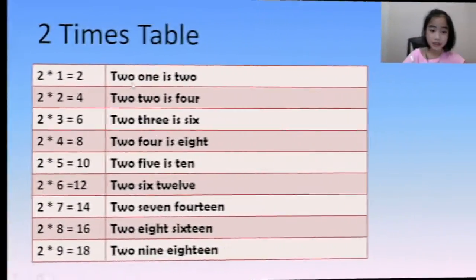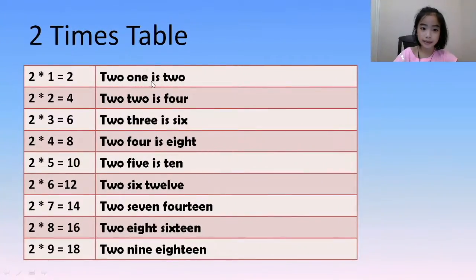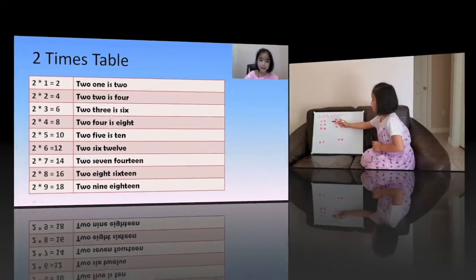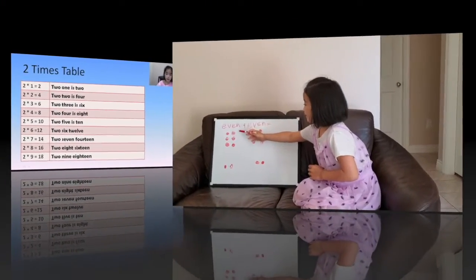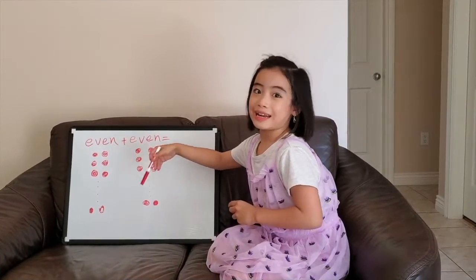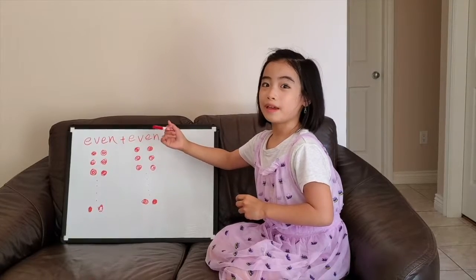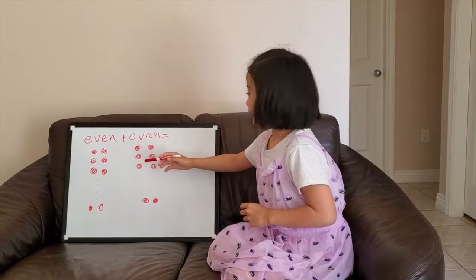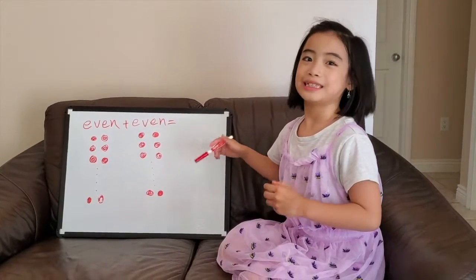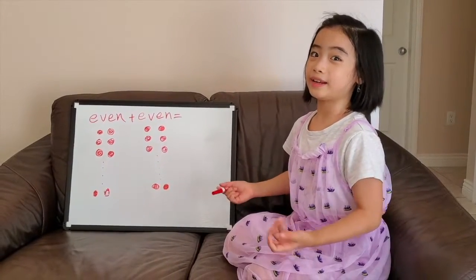2×1 is 2. 2×2 is 4. 2×3 is 6. 2×4 is 6. This even can have pairs, and the other even is the same thing.